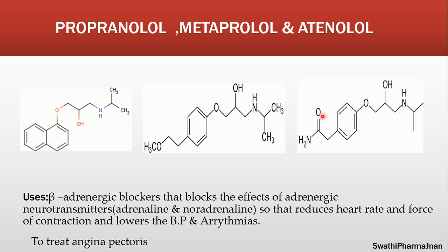What are the uses of beta blockers? For the treatment of angina pectoris, beta-adrenergic blockers block the effects of adrenergic neurotransmitters like adrenaline and noradrenaline. These increase the heartbeat and may lead to arrhythmias when the person is already suffering with angina pectoris. So we can reduce the heart rate, reduce the force of contraction, and lower the BP and arrhythmias by giving beta-adrenergic blockers, which are used as combination drugs along with nitro vasodilators. They are also used to treat angina pectoris.